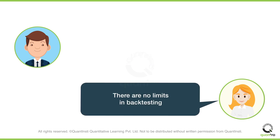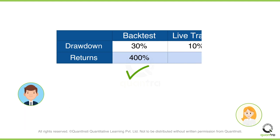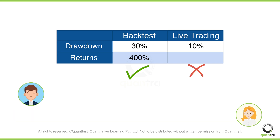But Mary cautions John that in backtesting you don't have any limitations. If the backtest shows 30% drawdown but 400% returns, you will accept it. But in live trading, you have actual money on the line, and you might cut your losses if the strategy performance is down by 10%. Thus, going from theory to practice can be difficult.